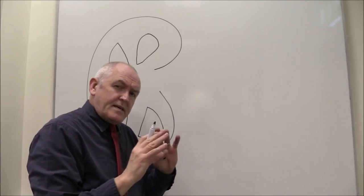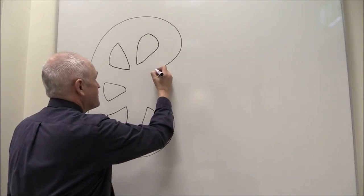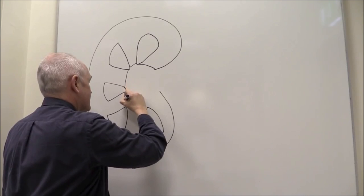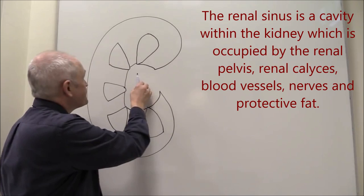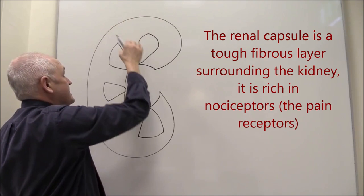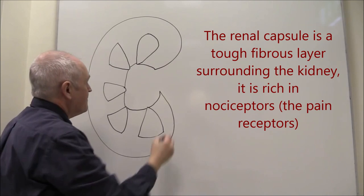Now the kidney is essentially in one respect hollow. There's a hollowed out area in the middle. So in the middle here there's a hollowed out area and this hollowed out area is called the renal sinus. So we've got the capsule around the outside, then the cortex, the cortical columns, the medulla, and the sinus.